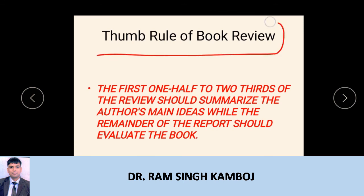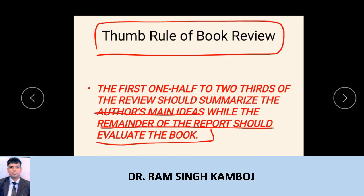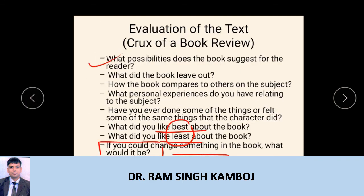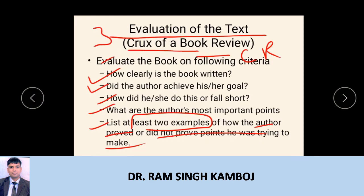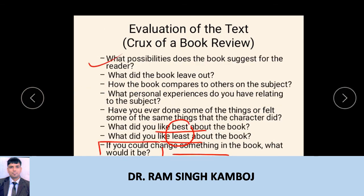At last, coming to the thumb rule of book review: the first one-half to two-thirds of the review should summarize the author's main ideas, while the remainder of the report should evaluate the book. Whatever I have discussed, you should make the evaluation by covering all these points.